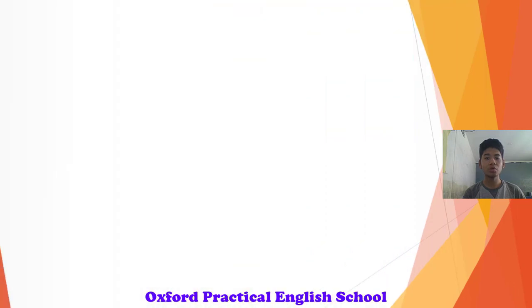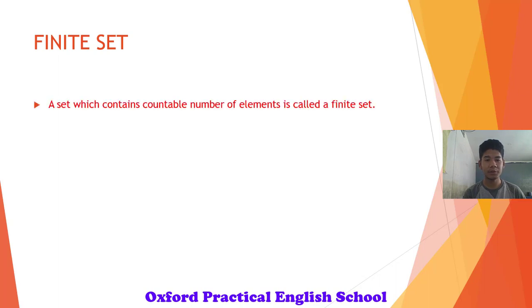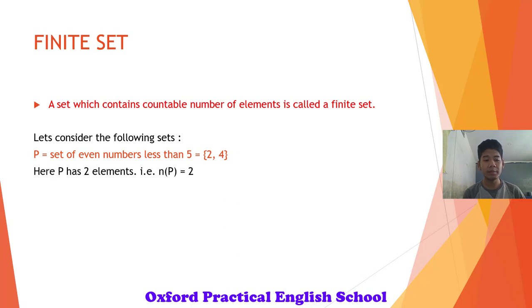Now moving on to the types of sets. The first type of set is finite set. Finite simply means countable. So a set which contains countable number of elements is called a finite set. Let's consider the following sets. Set P, set of even numbers less than 5. They are 2 and 4. Can we count the number of elements? Yes. There are 2 elements we can count them and hence it is a finite set.